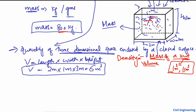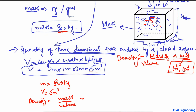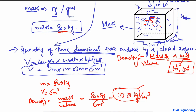For example, the mass of the concrete in this object is 800 kilograms and the volume is 6 cubic meters. Density equals mass divided by volume. So 800 kilograms divided by 6 cubic meters gives us 133.33 kilograms per cubic meter. This means that 133.33 kg of mass is present in one cubic meter.